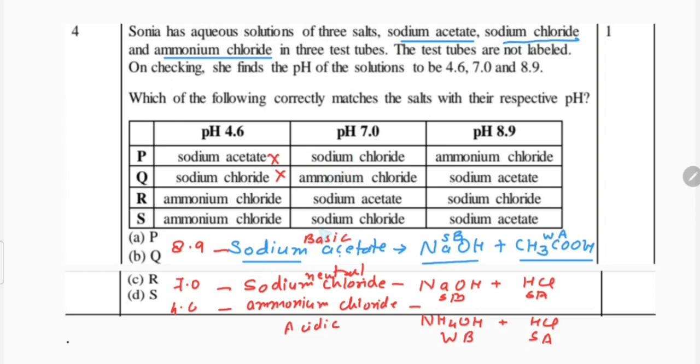But in the second column you can see sodium chloride is there, so S is correct, not sodium acetate. And 8.9 pH of sodium acetate, that is also correct. So option S becomes correct here. I hope you understood well. We'll meet in the next video. Thank you.